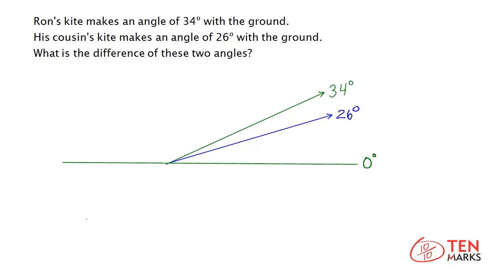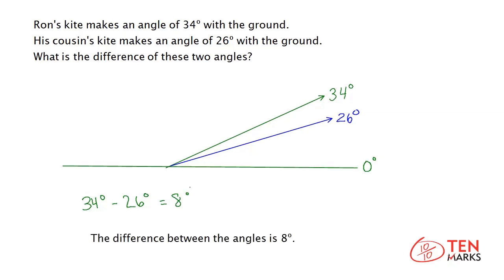So we want to find how much more is 34 degrees than 26 degrees. In order to find the difference in the angles, you need to subtract. 34 degrees minus 26 degrees equals 8 degrees. The difference between the angles is 8 degrees.